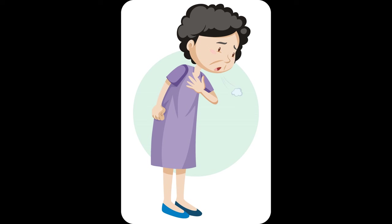The case today involves a 70-year-old patient brought in by ambulance for shortness of breath. The patient was recently diagnosed with pneumonia and empyema, status post chest tube, and was in moderate respiratory distress. Vitals showed a pulse of 75, respirations of 30, systolic blood pressure in the 80s, satting 98% on room air, and was afebrile.